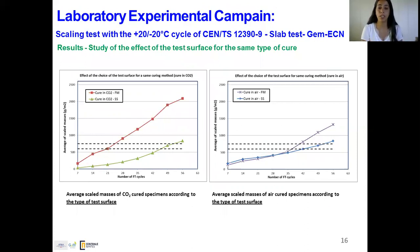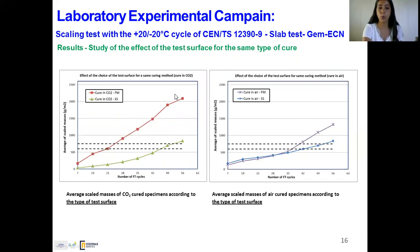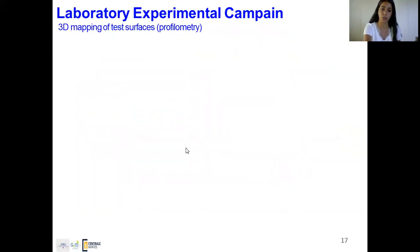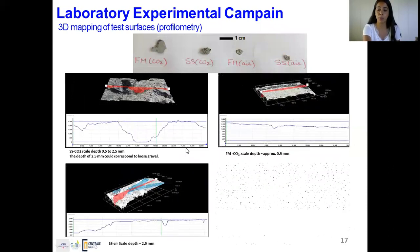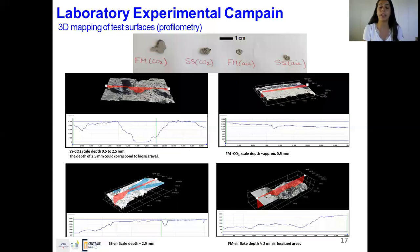The second part of our study was to examine the effect of the test surface for the same type of cure. For both CO2 curing and air curing, the mold bottom face showed more scaling than the sawn face — the same result found for specimens placed at Mont-Égual in real exposure conditions. Furthermore, 3D mapping (profilometry) of the degraded test surfaces showed that even though the mold bottom face had more scaling by mass, the depth of degradation on the sawn face is higher for both curing types, reaching up to 2.5 mm, related to aggregates removed from the surface during scaling.